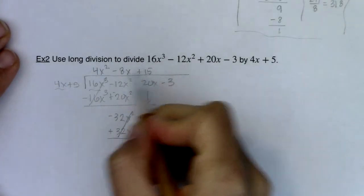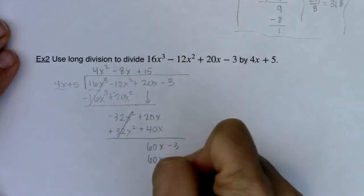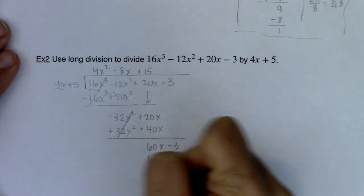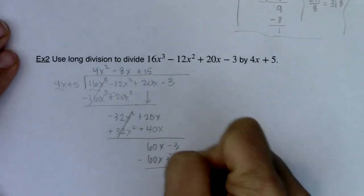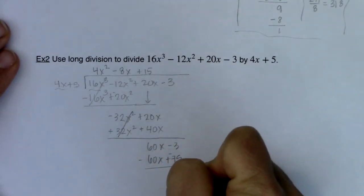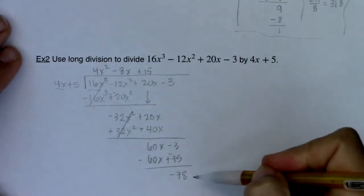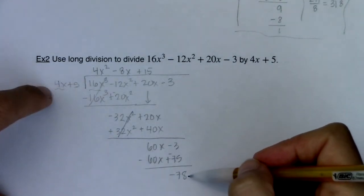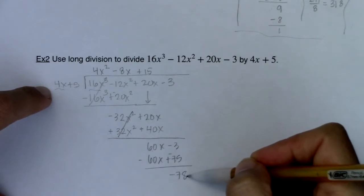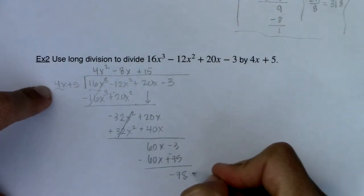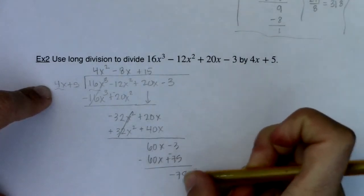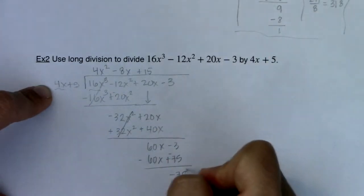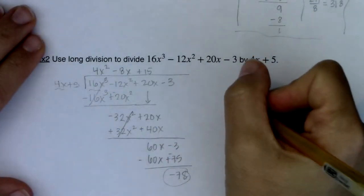So I'm going to have 60x, 15 times 5 is 75. Let me change the signs here. I've got negative 78. I'm finally in a position where the degree in my divisor is bigger than the degree of this number, because it's technically x to the 0. So I know I can stop and that is my remainder.